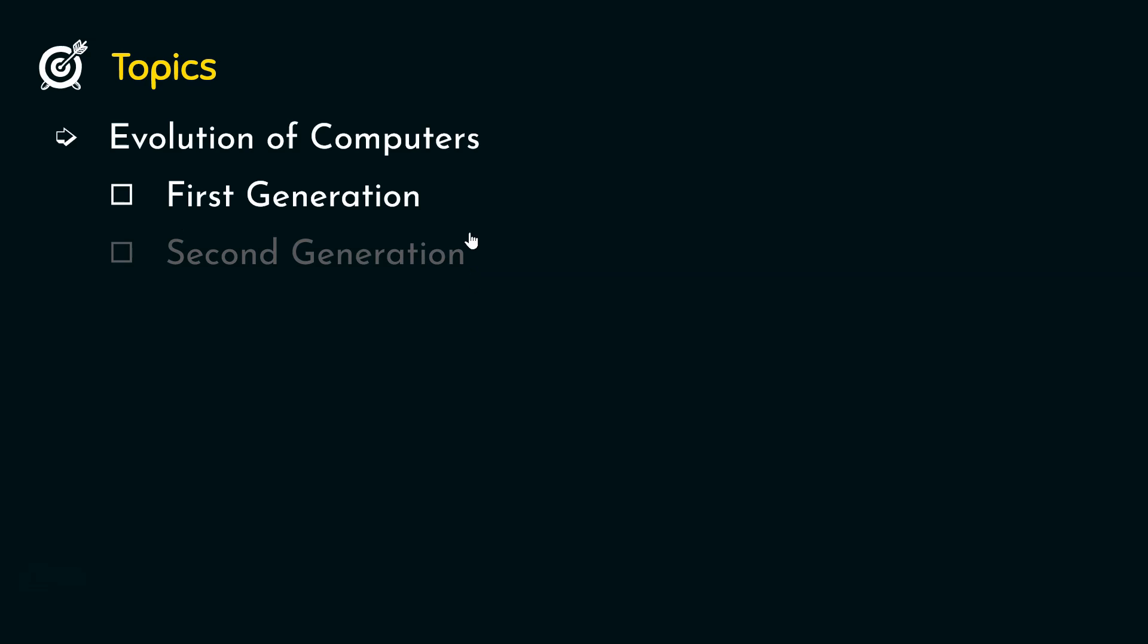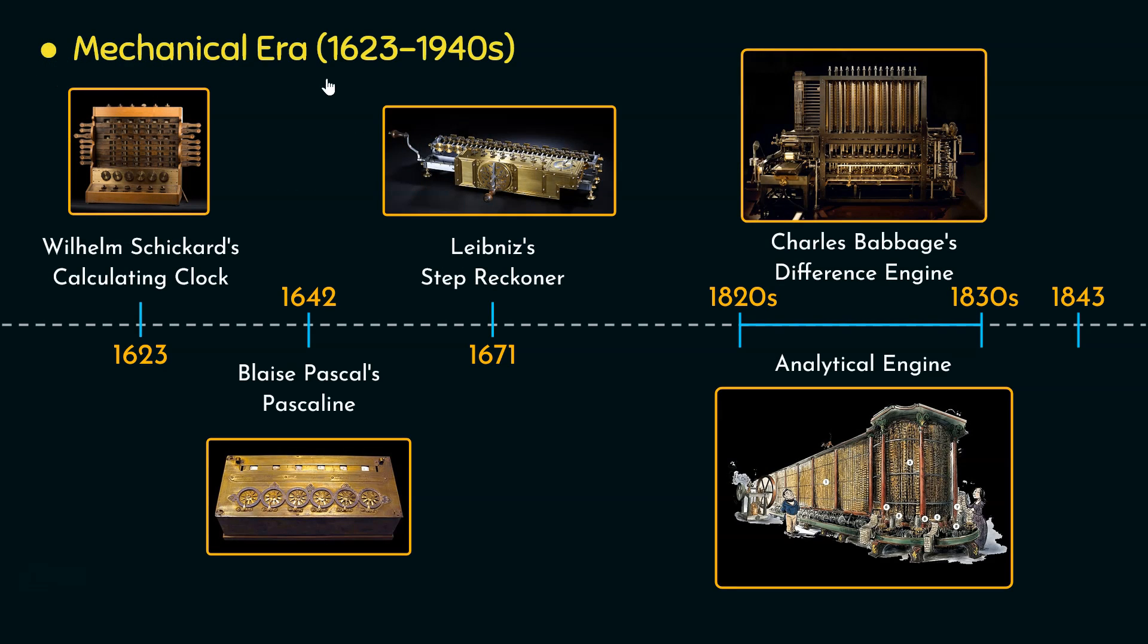Let's now begin with the first generation. Before diving straight to the first generation of computers, let's have a small recap of the mechanical era. In the previous session, we learned that the mechanical era of computation existed from 1623 till the early 1940s.